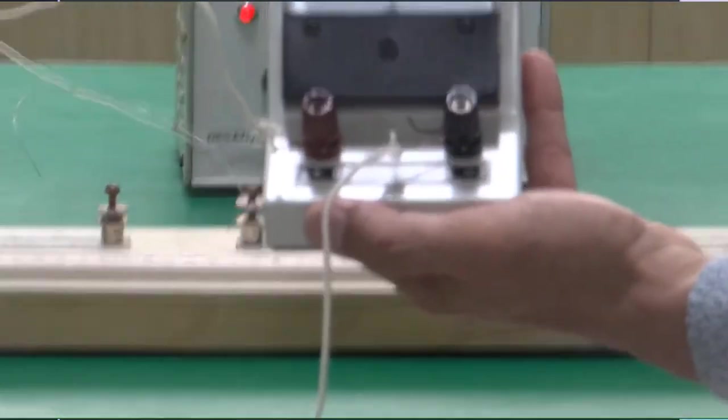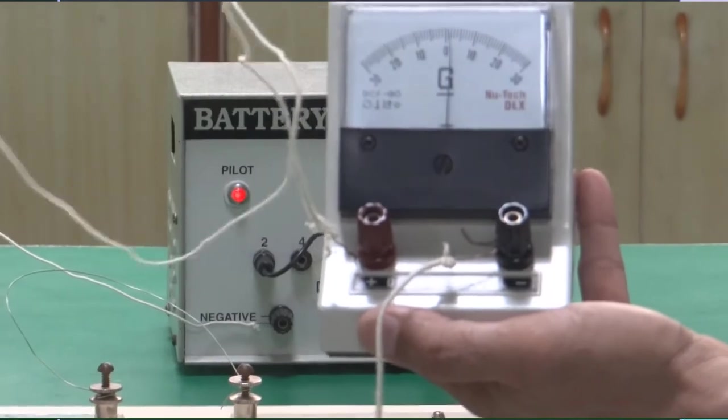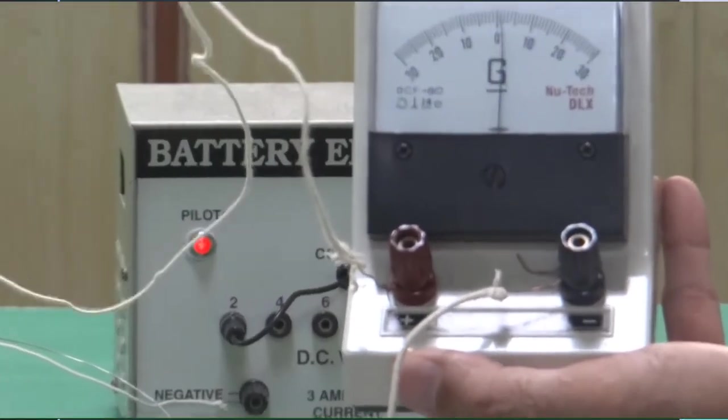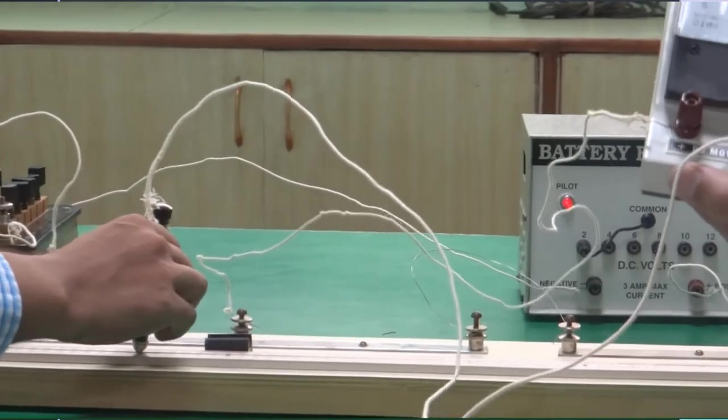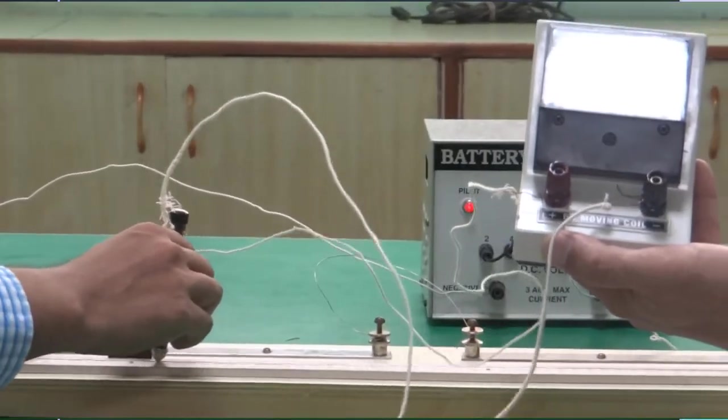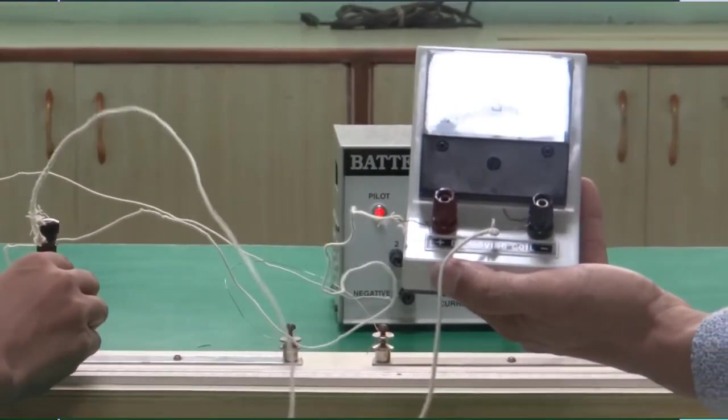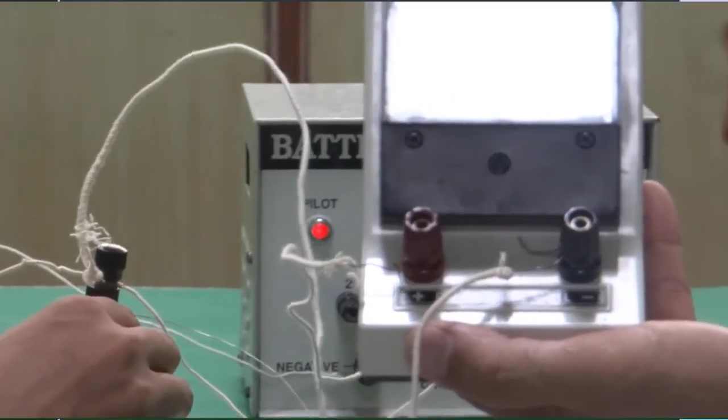So let's try to find out. One important precaution is you have to place the jockey gently over this. Because if you press it hard, the wire will get spoiled. Its cross section can get wavy. So let's try to find out where is the null point.